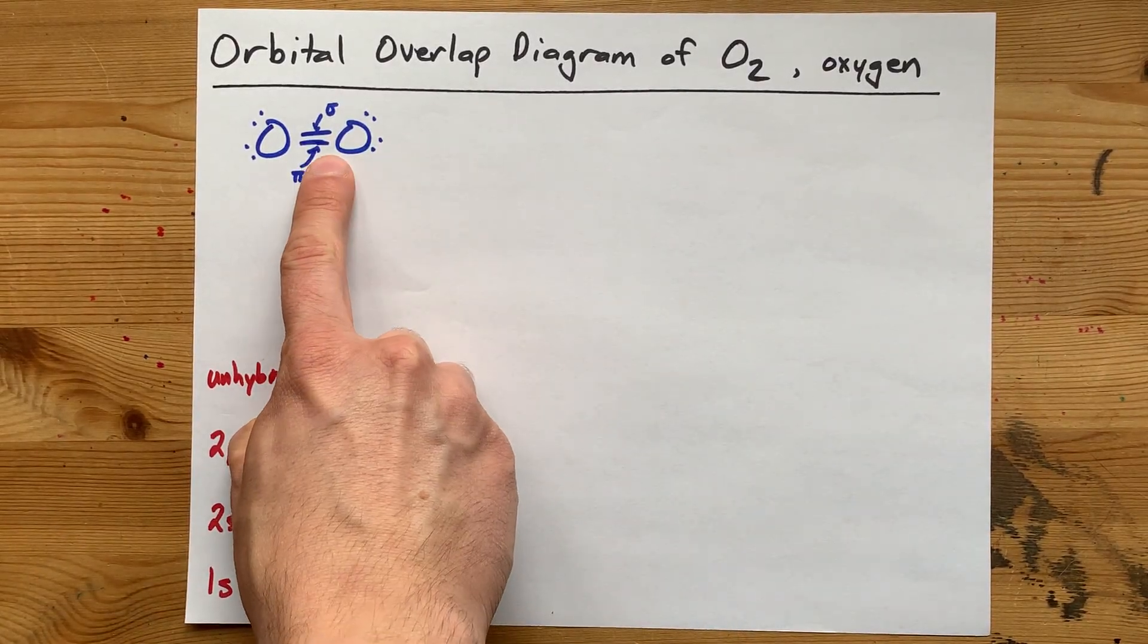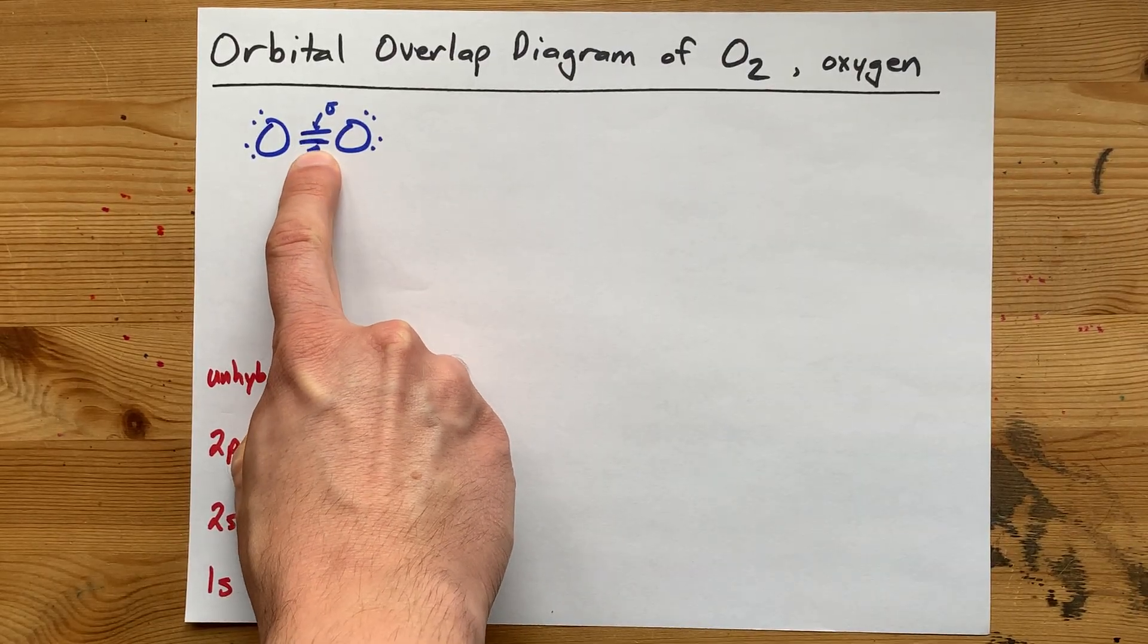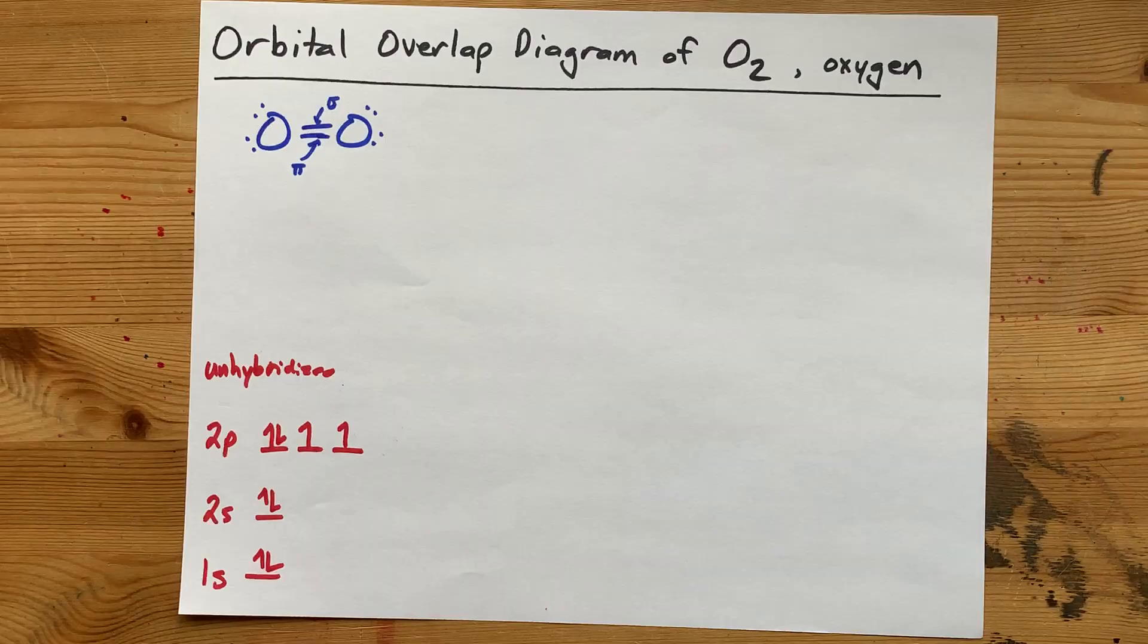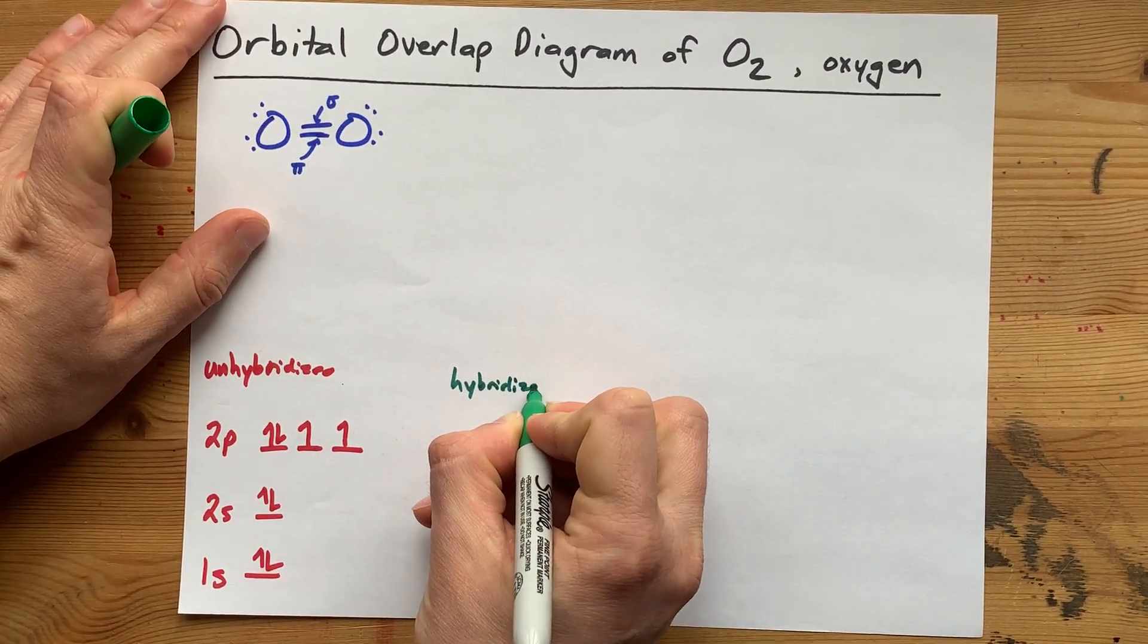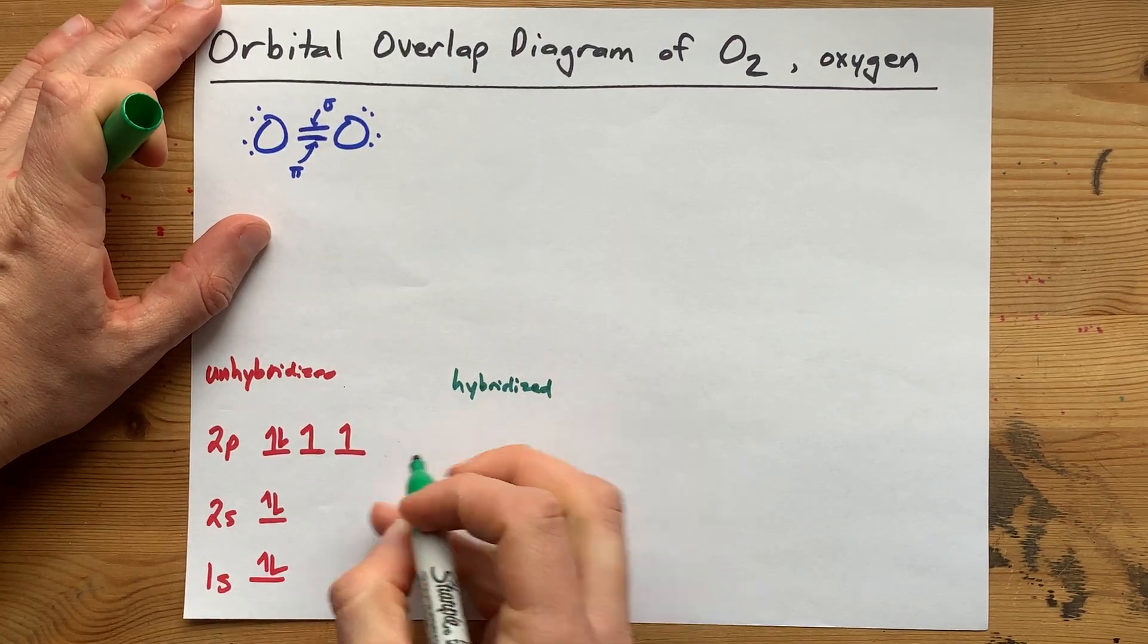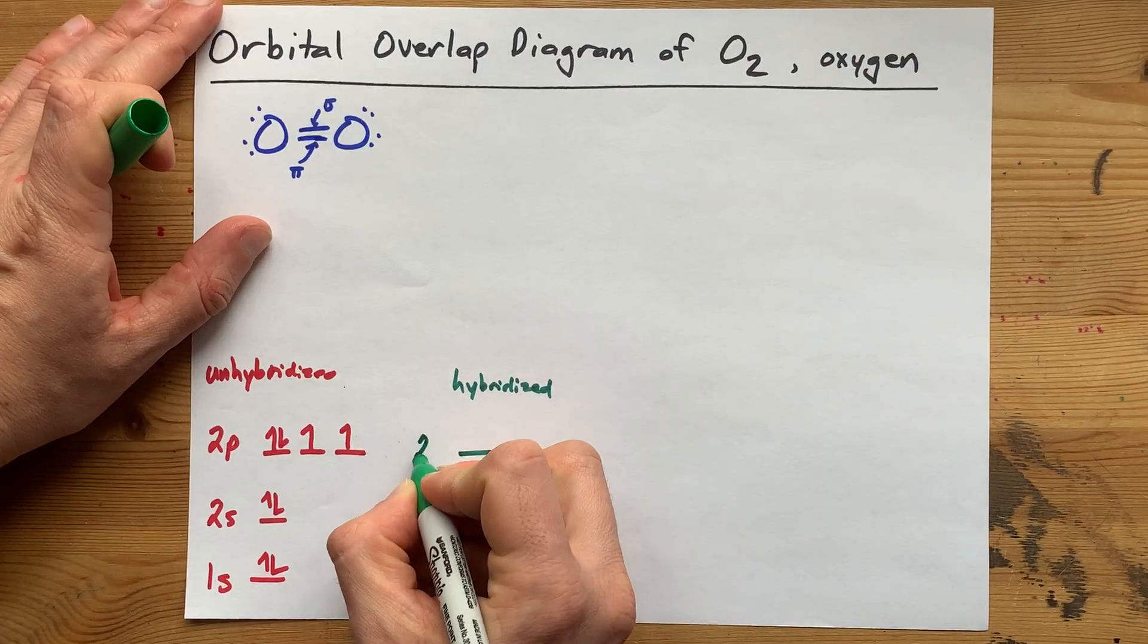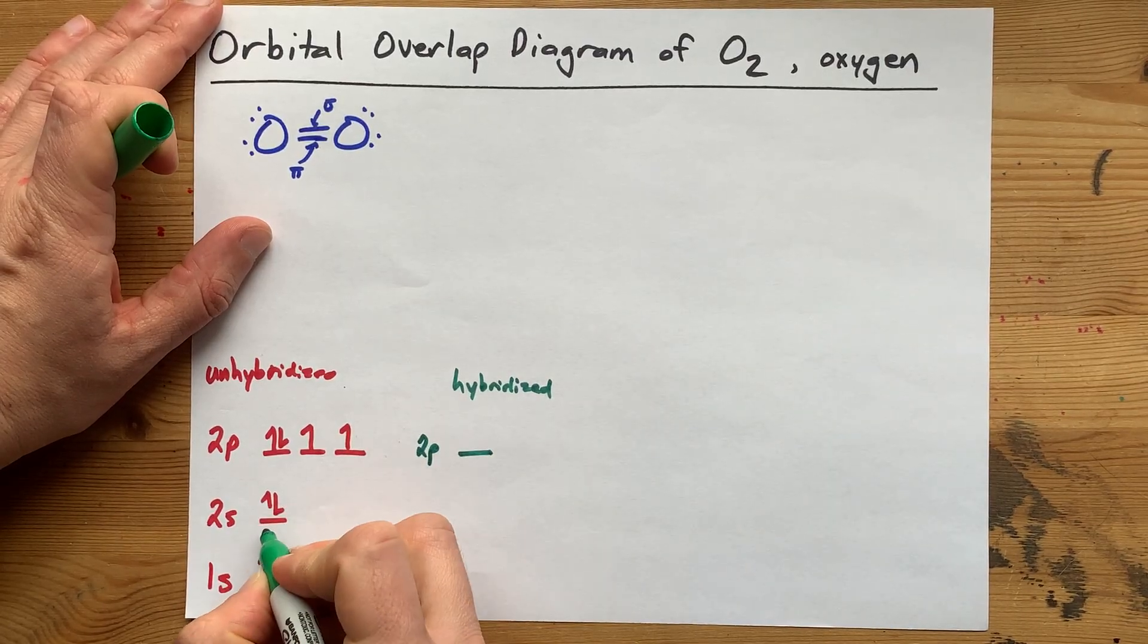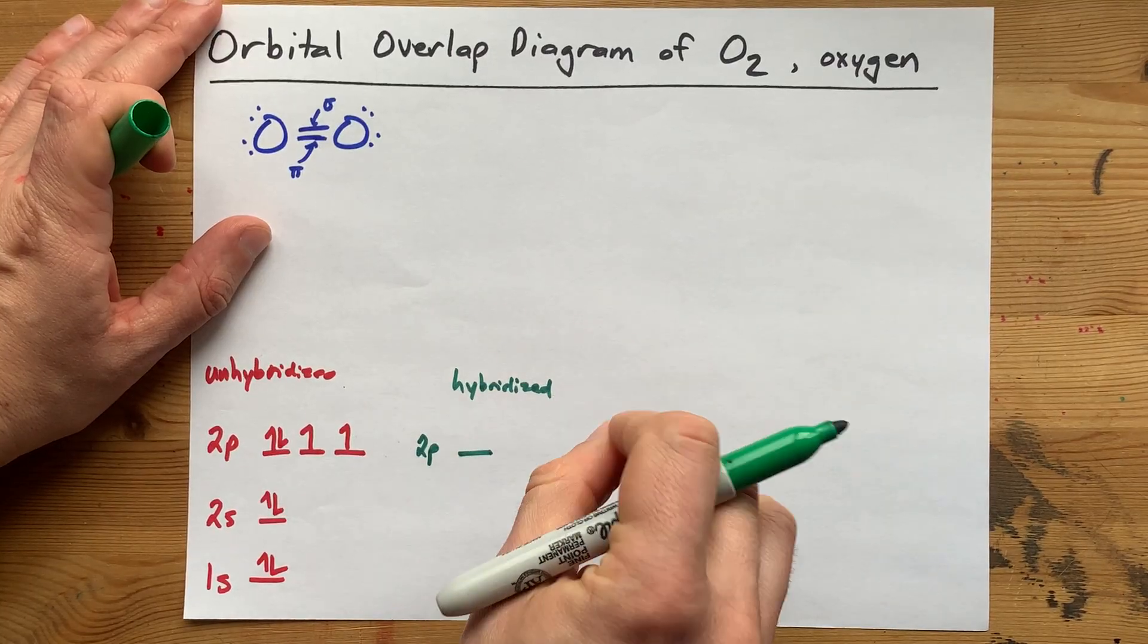But in this molecule, you need a sigma bond and a pi bond. Therefore, the hybridized version of this oxygen has one of these 2p orbitals left over.